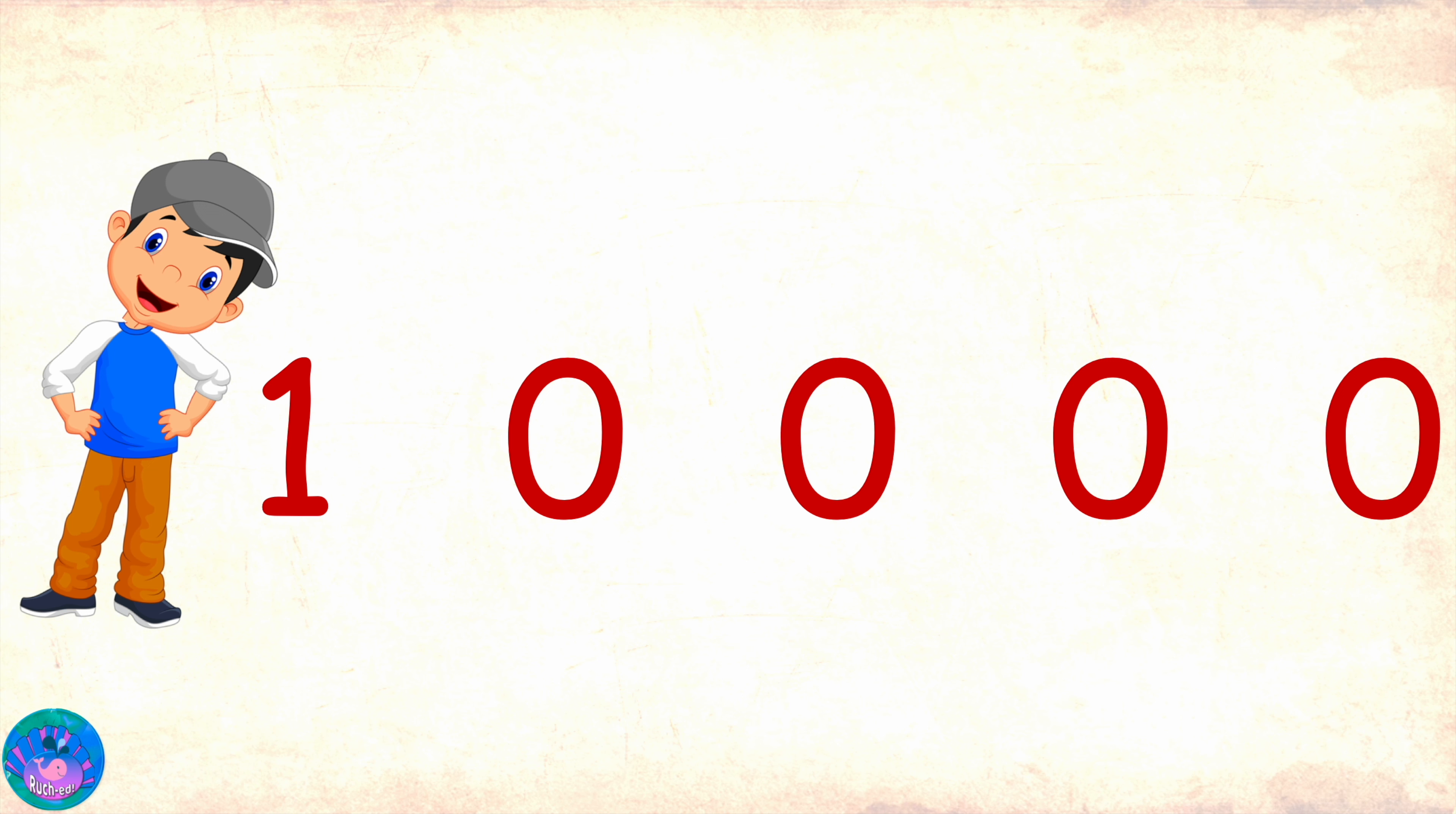Before we learn how to read four and five digit numbers, let's first understand number places for these digits. Here, we have a five digit number with the digits 2, 7, 3, 5, 2. You already know that the rightmost digit is in the ones place. Before that, we have the tens place and before that, we have the hundreds place.